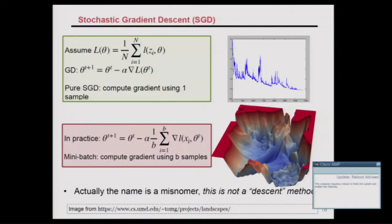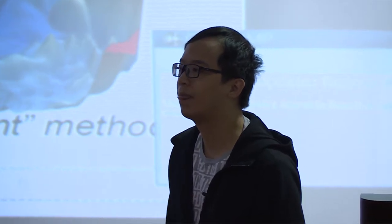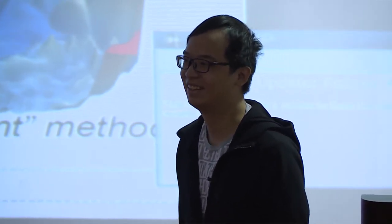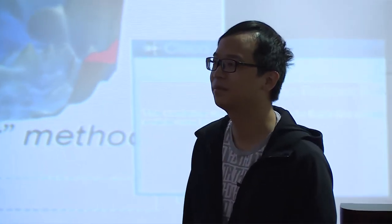For neural network training, using full gradient descent is very costly, so usually people use SGD. In the literature SGD means computing the gradient with one sample, but in practice — especially for deep learning — people use a mini-batch of samples. So it's essentially a batch version of SGD, though people still call it SGD. There's also a naming debate: is 'stochastic' modifying 'descent' meaning it's a descent direction that happens to be stochastic, or is it a stochastic approximation of a descent direction?